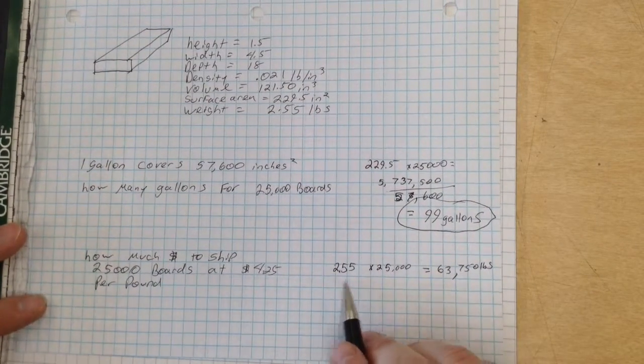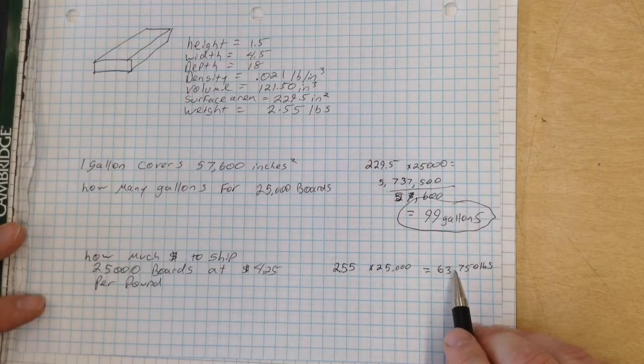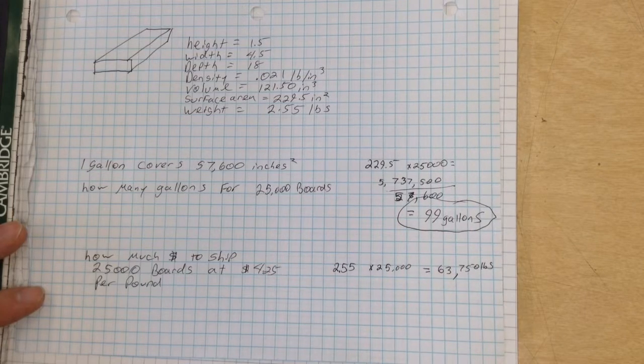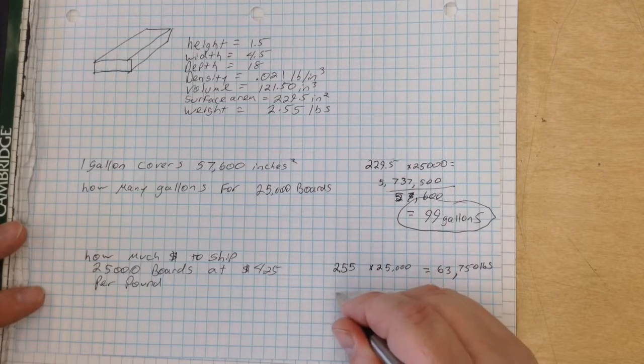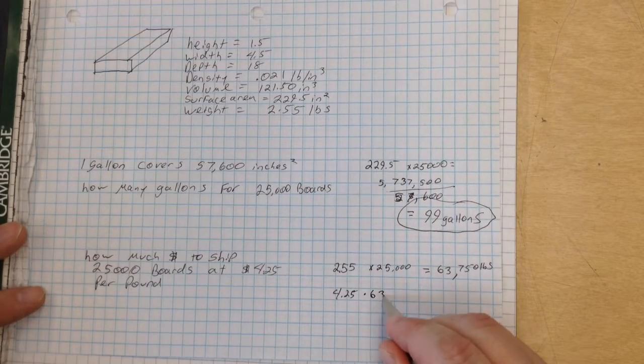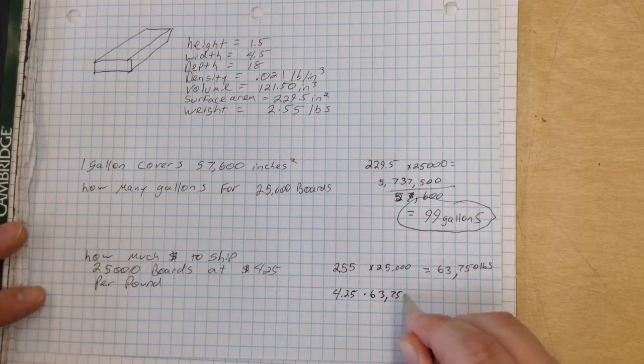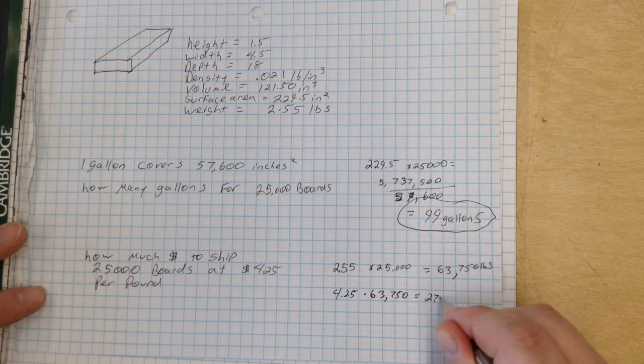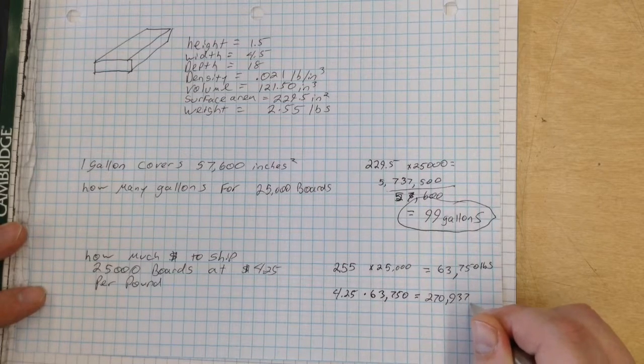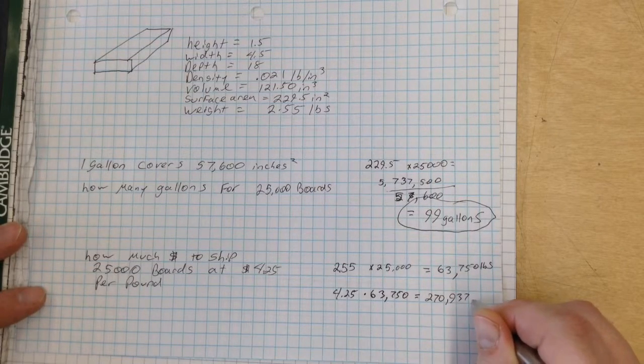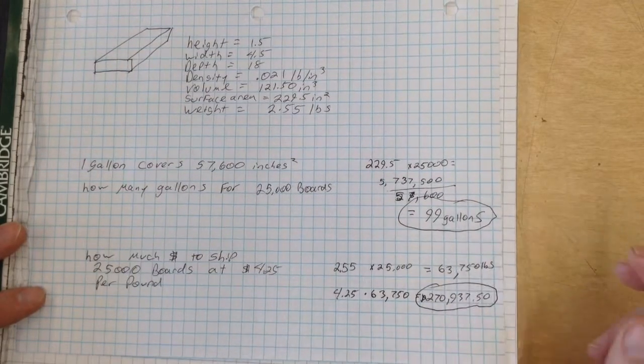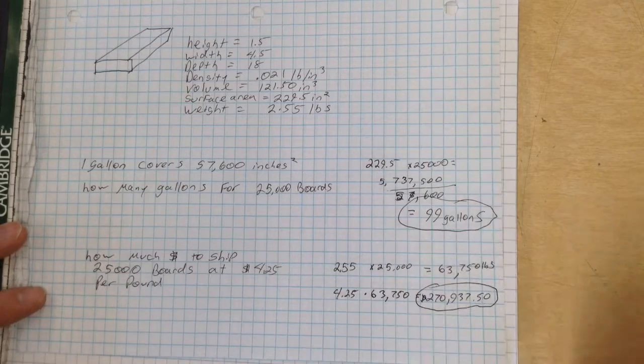Okay? So we've got 63,750 pounds. Now we have to figure out how much it's going to cost at $4.25 per pound. So $4.25 times 63,750 pounds gives us $270,937.50. So it's going to cost us that much to ship 25,000 boards.